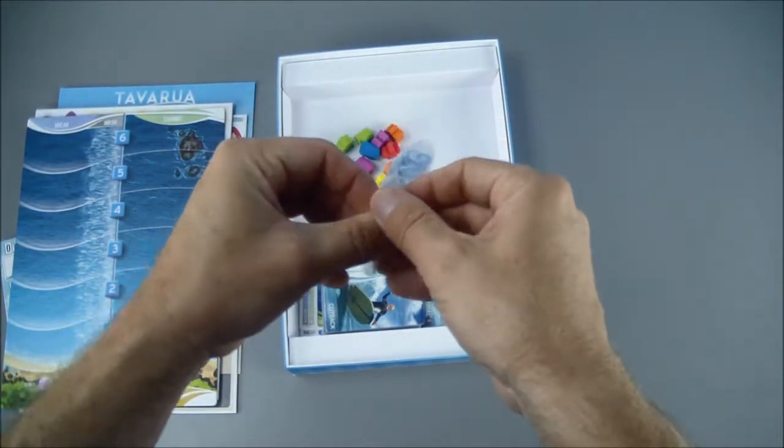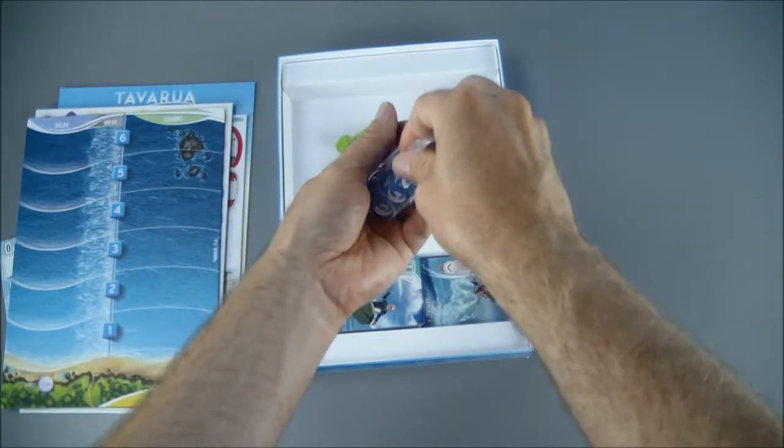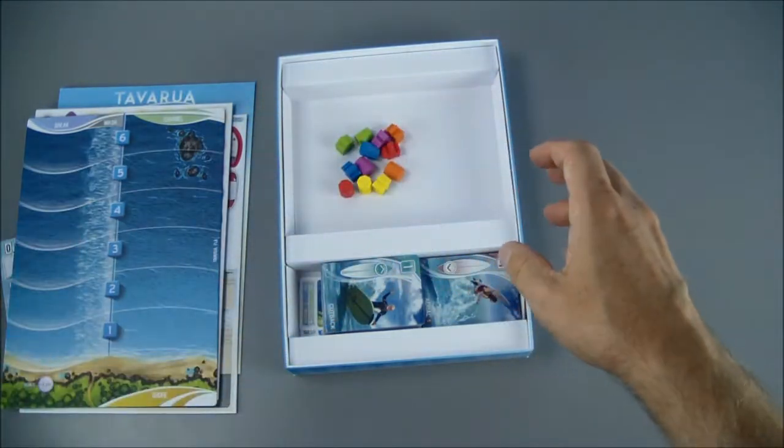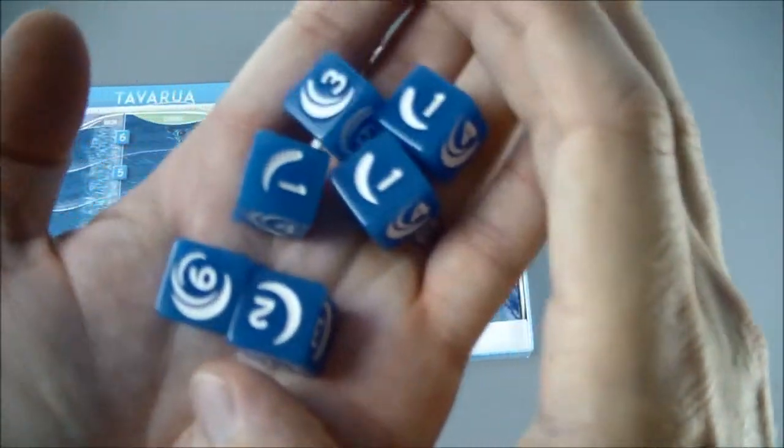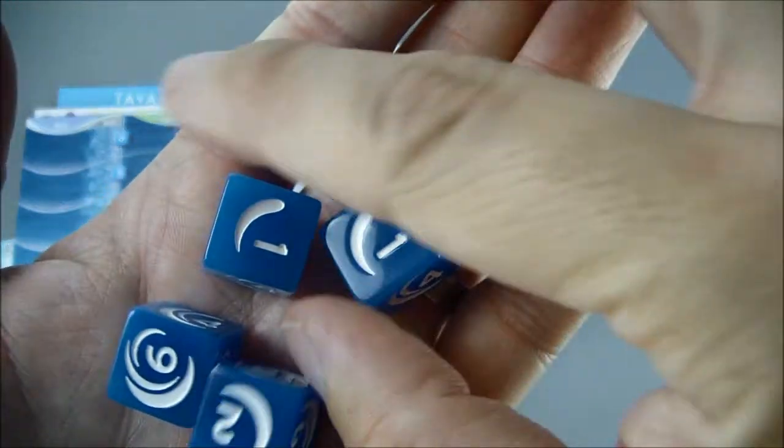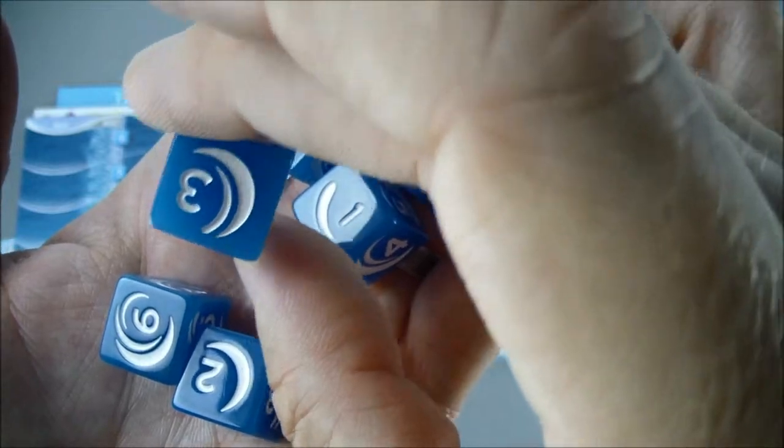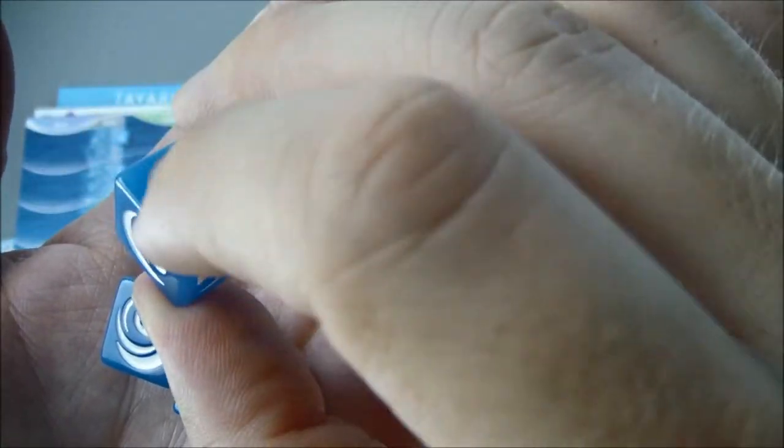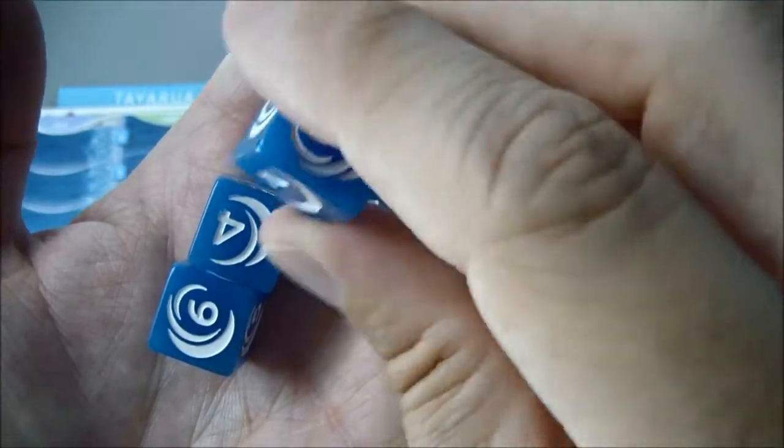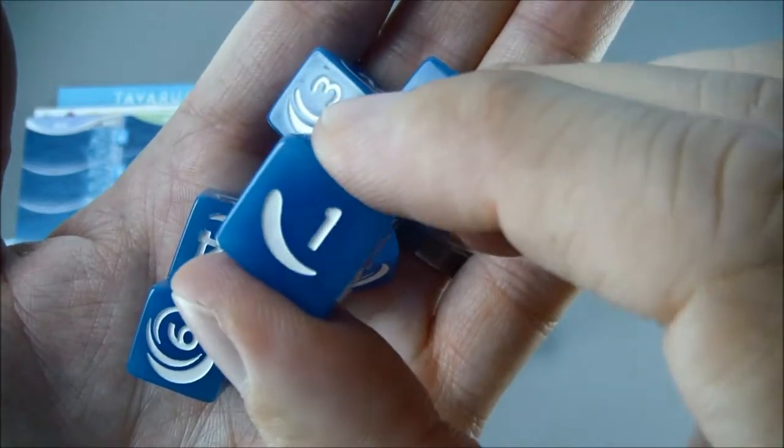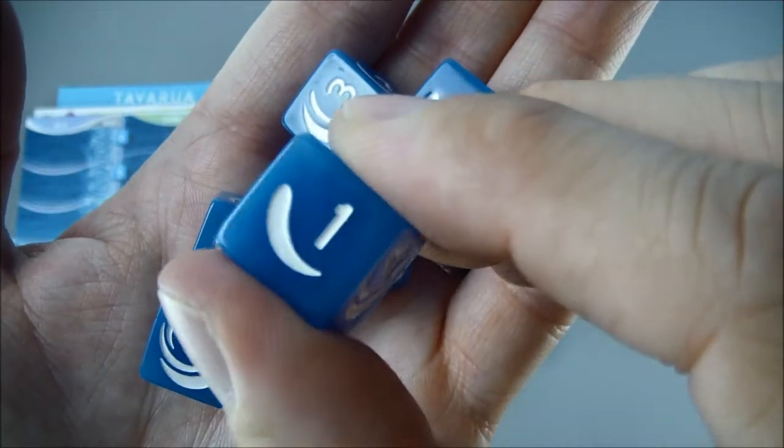Got some custom dice. Oh those look pretty cool, hopefully it comes through in the camera. The blue on them, they're like partially translucent and the blue is not one solid color. I imagine that's to look like the ocean.